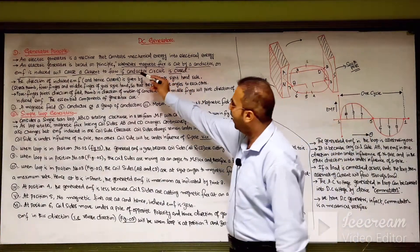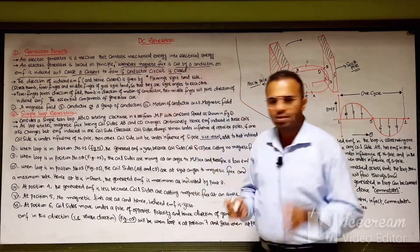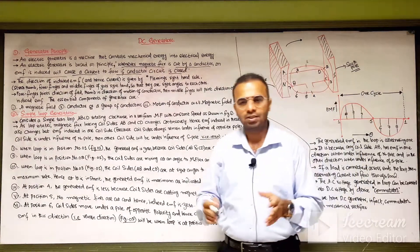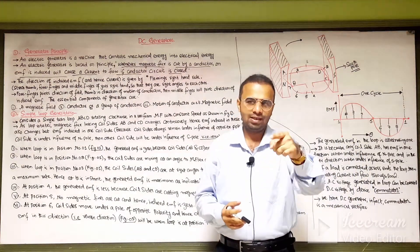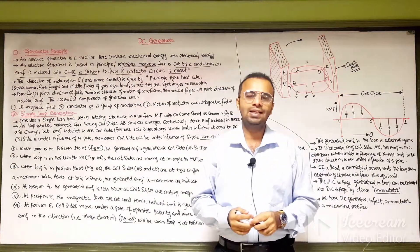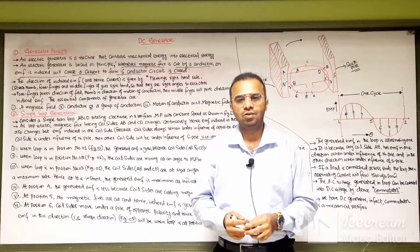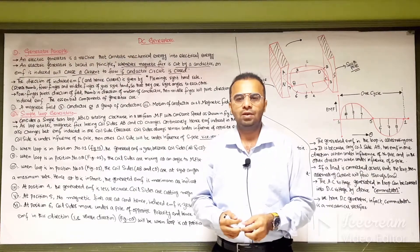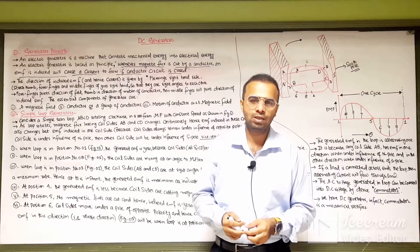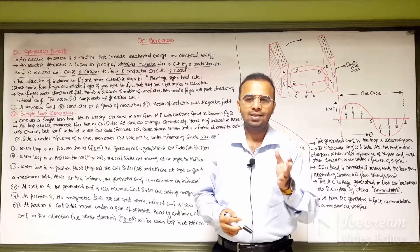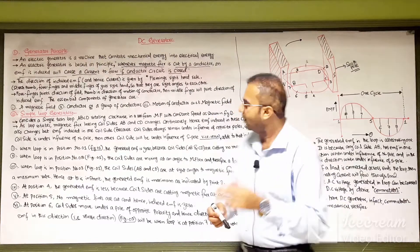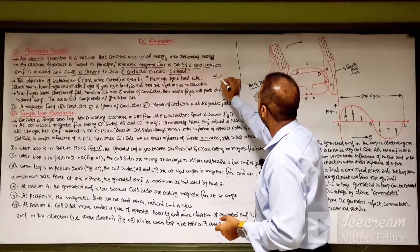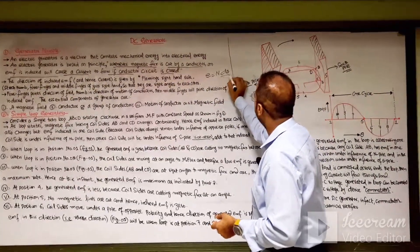An electric generator is based on the principles of Faraday's law of electromagnetic induction. Whenever the flux linking with a coil changes, an EMF is induced in the coil. The direction of the induced EMF is directly proportional to the rate of cutting of flux lines, expressed as E = N dΦ/dt.